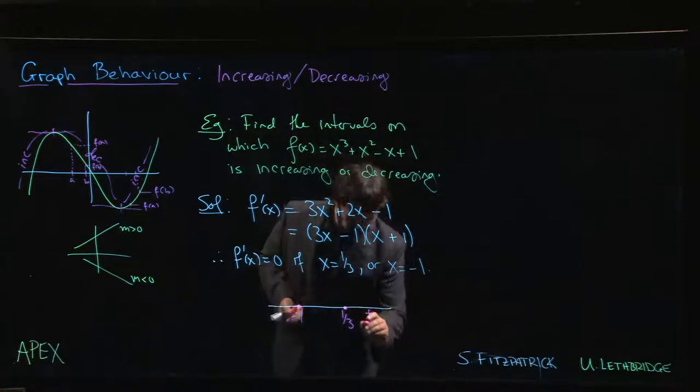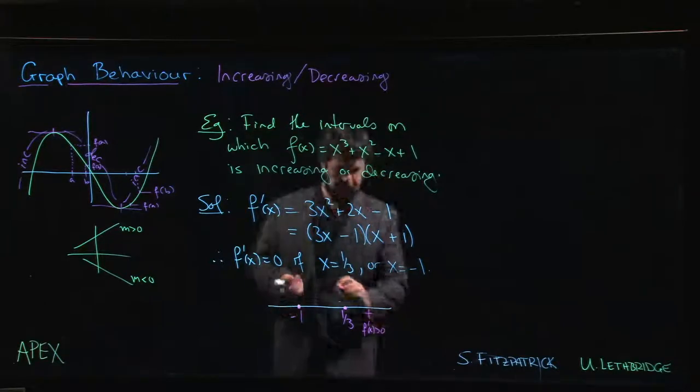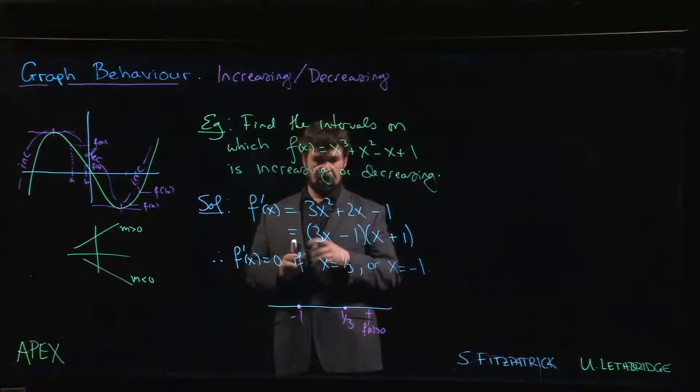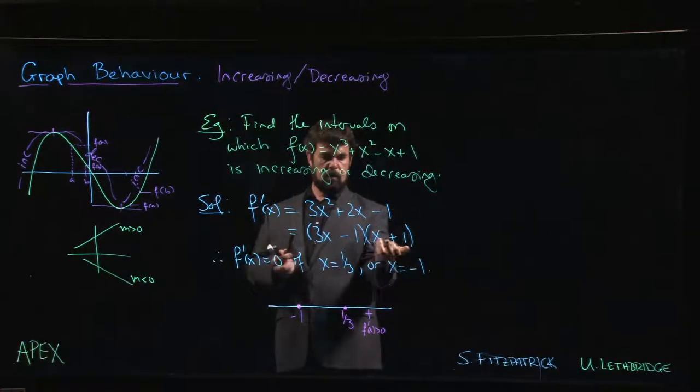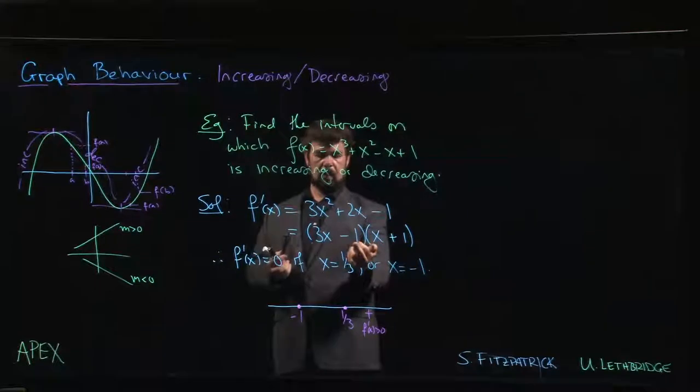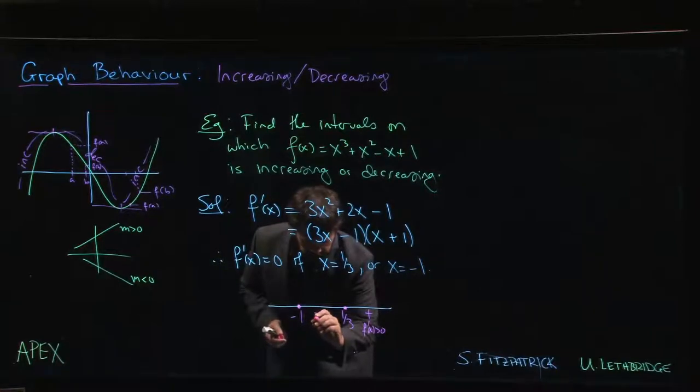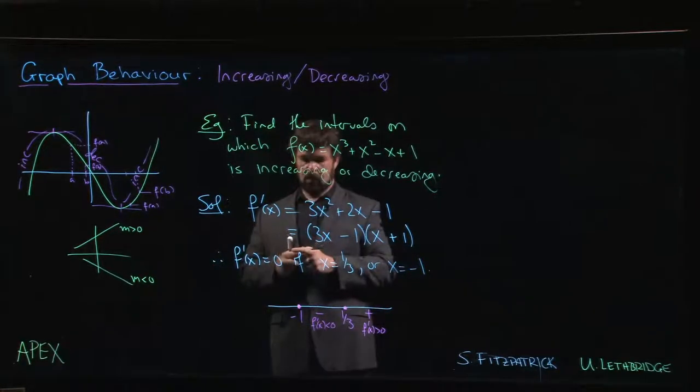So I'm putting this plus sign to stand for f'(x) > 0. Between -1 and 1/3, we can try something like 0. 0 + 1 is positive, 0 - 1 is negative. Negative times a positive is negative, so f'(x) < 0.